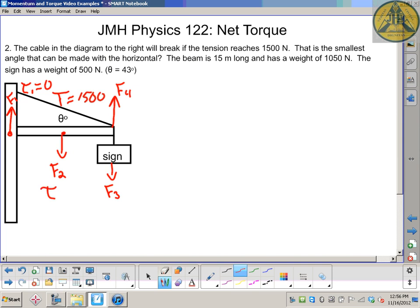F2 has a torque, called torque two. It would make this rod rotate clockwise, so it'd be negative. F3 has a torque called torque three. It would also make everything go clockwise, so it would be a negative torque. And torque four would be up and rotate counterclockwise.